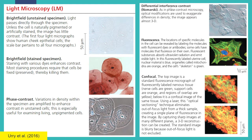Differential interference contrast microscopy, shown here with human cheek epithelial cells, allows the image to appear almost three-dimensional. Fluorescence microscopy uses fluorescent dyes or antibodies that absorb ultraviolet radiation and emit visible light. Confocal microscopy — the top image uses a standard fluorescent microscope, while the lower one uses laser for optical sectioning to eliminate out-of-focus light from a thick sample and for 3D reconstruction of specimens.